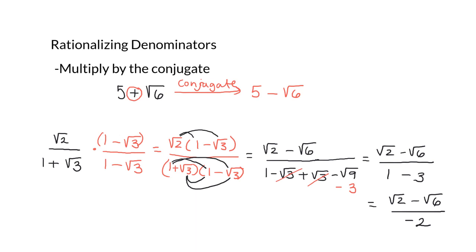That's one way to write it. A different way would be negative root 2 plus root 6 over positive 2. Either of those answers would be correct. Notice that with either form there is no longer a radical or a square root in the denominator — so multiplying by the conjugate is the process for rewriting the fraction without a root in the denominator.